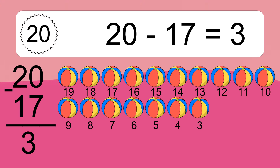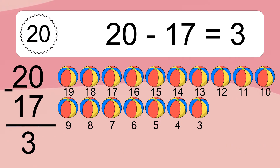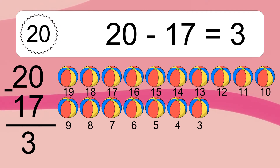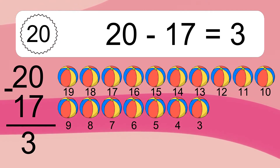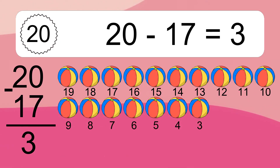Let's count it. 19, 18, 17, 16, 15, 14, 13, 12, 11, 10, 9, 8, 7, 6, 5, 4, 3.